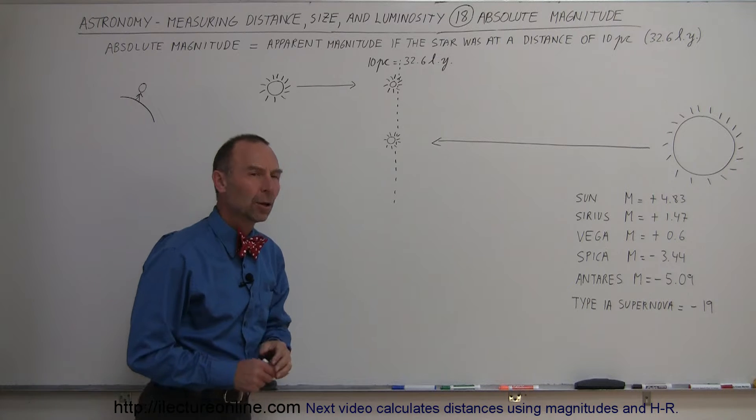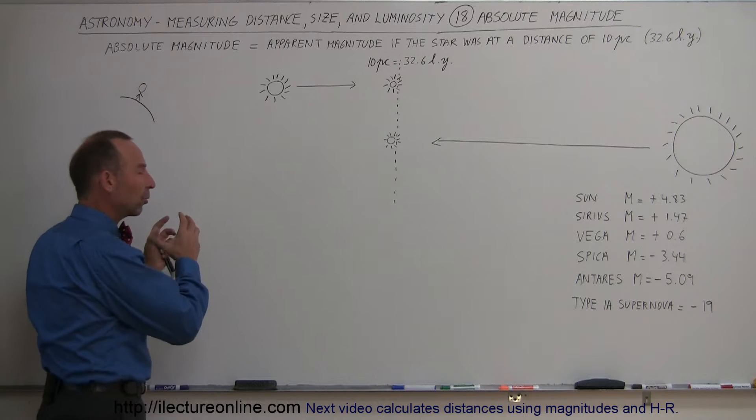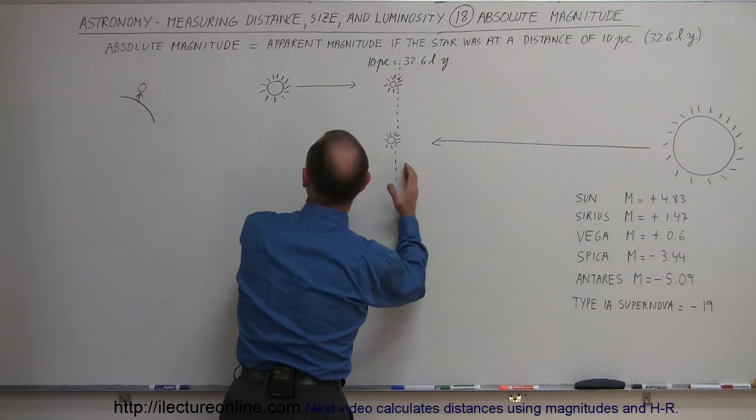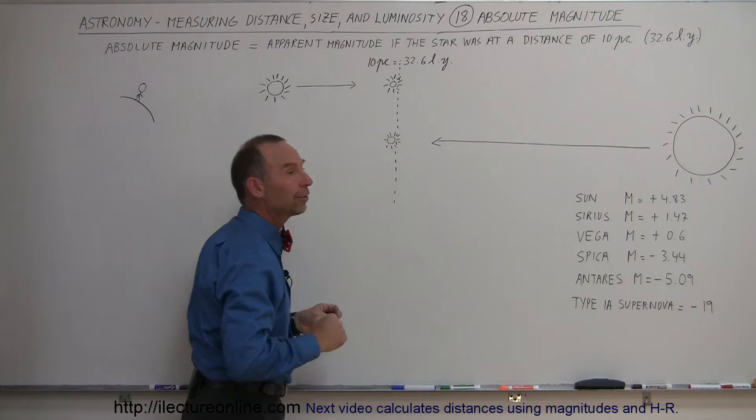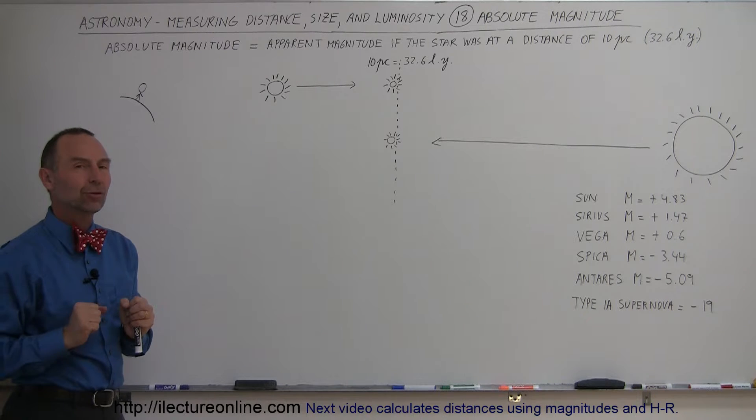What does that mean? If you want to know what the absolute magnitude of a star is, you would take the star, whichever star it is, and place it at a distance of 10 parsecs away from the Earth, and then see what would the apparent brightness be of that star. That is then the absolute magnitude of a star.